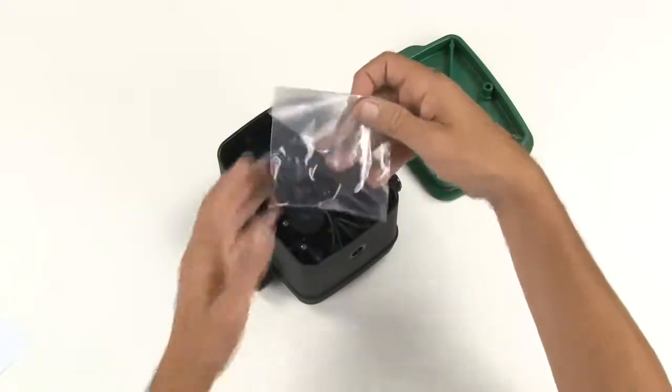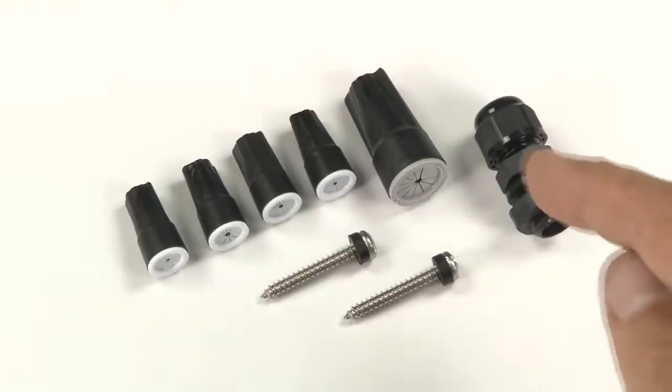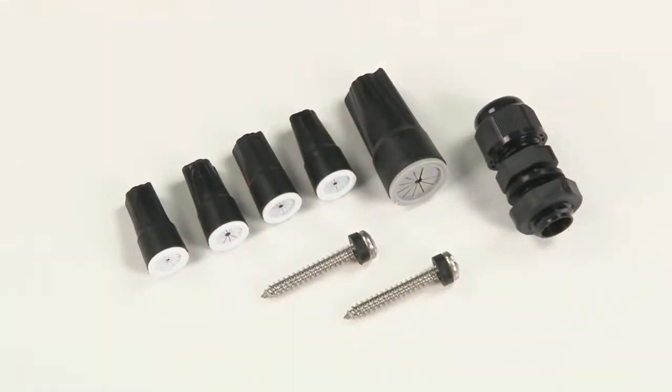Inside the box you'll find a bag of components. In the bag is a cable gland to seal the wiring, one large and four small wire connectors for connecting cable to your solenoids, and two stainless steel screws with seals for securing the lid.